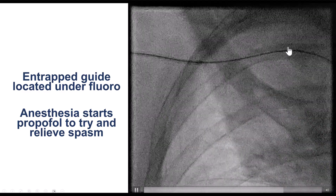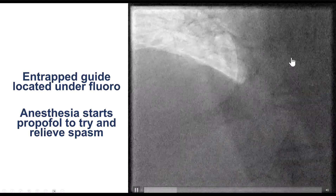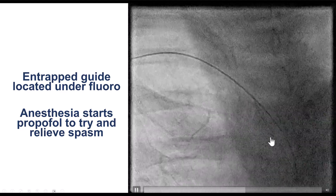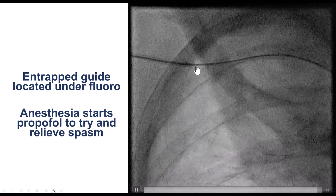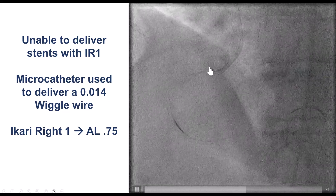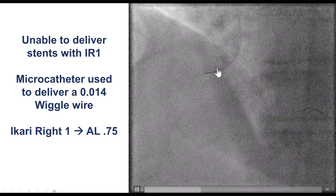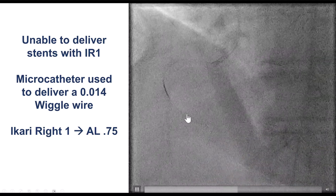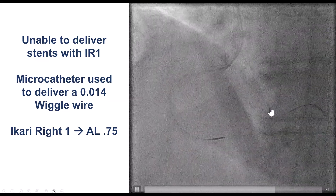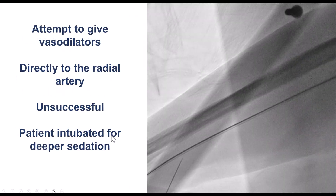In the meantime, we had anesthesia come and they were giving propofol. But unfortunately, despite the propofol, the catheter was still stuck in the subclavian artery. We went back to the right coronary artery but were unable to deliver any stents. The Ikari guide doesn't provide much support, so we used a microcatheter and switched the guidewire for a long wiggle wire, then switched the guide for an AL-0.75 guide.